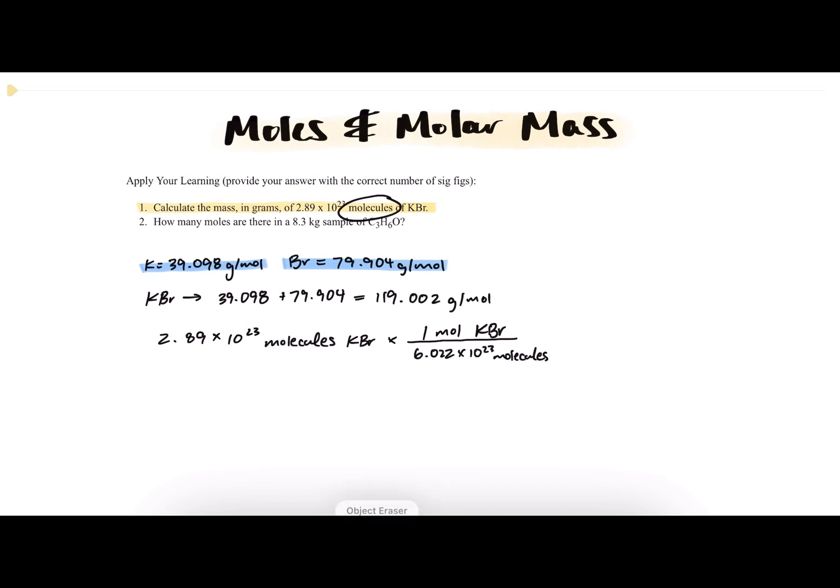And then simultaneously, we can also go ahead and find how much mass this will have by multiplying by the molar mass. So when we multiply across and then divide by Avogadro's number, we find that 2.89 times 10 to the 23 molecules of KBr will come out to 57.1 grams of KBr, or potassium bromide.